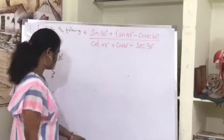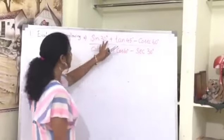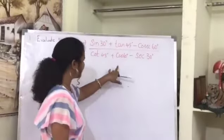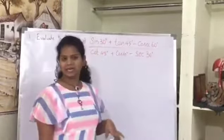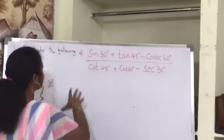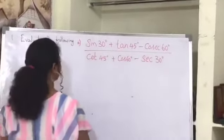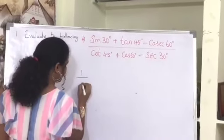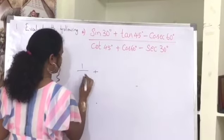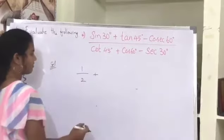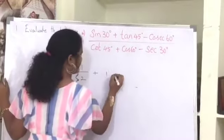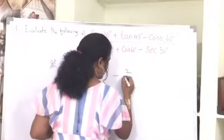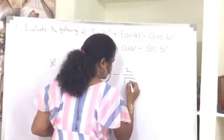The third question: evaluate sin 30 plus tan 45 minus cosec 60, all divided by cos 45 plus cos 60 minus secant 30. To find the solution, sin 30 degree equals 1 by 2, plus tan 45 which is 1, minus cosec 60 degree which equals 2 by root 3.